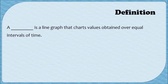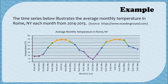The second type of graph we'll discuss is called a time series. A time series is a line graph that charts values obtained over equal intervals of time. The time series below illustrates the average monthly temperature in Rome, New York from 2014 to 2015. In a time series, the horizontal axis is broken down into equal intervals of time — in this case, months starting at January 2014 and ending at December 2015.